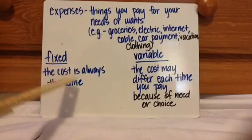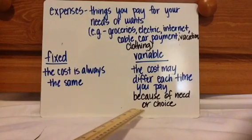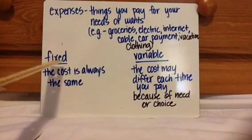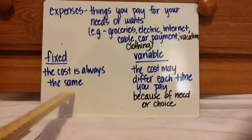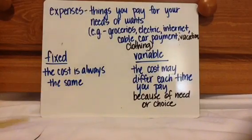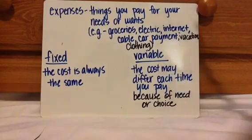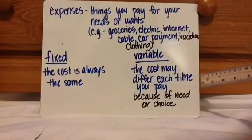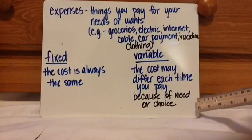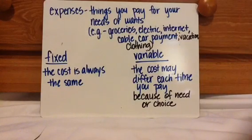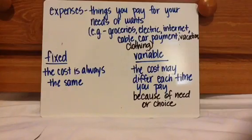Between those expenses, we have two kinds: fixed and variable. Fixed is something where the cost is always the same no matter what — every week, every month, or every year, it's the same amount. Then we have variable expenses, where the cost might differ each time you pay because of need or choice. One week you pay a certain amount, but the next week you decide not to get as much, so the cost will be lower — or if you want more, you pay more.